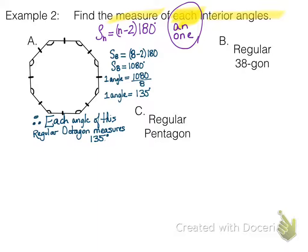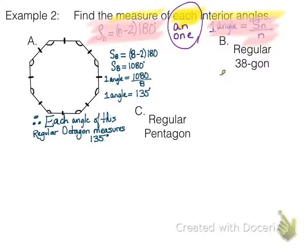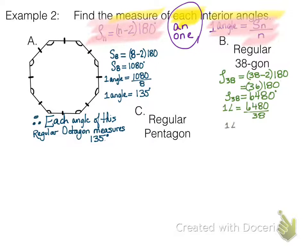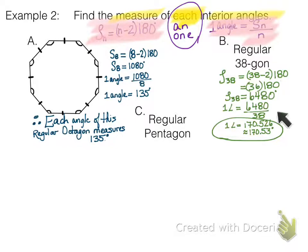Regular 32-gon — try it yourself by pausing. I made a note at the top: one angle equals the sum of all angles divided by the number of sides. Those are two very important formulas. For the 38-gon: 38 minus two times 180 gives 36 times 180, equaling a total of 6,480 degrees. We spread that out to all 38 angles by dividing by 38, giving approximately 170.53 degrees for each angle.